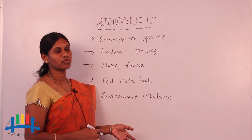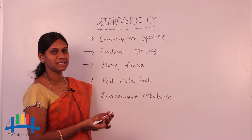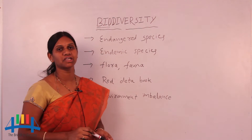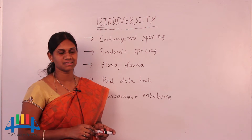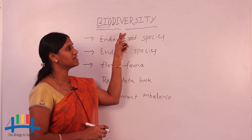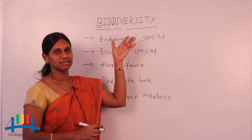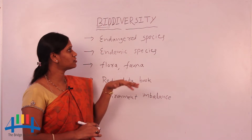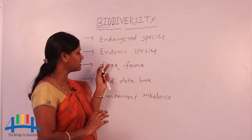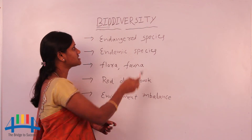Hello friends, now we are going to learn about biodiversity. Biodiversity means bio means the living things, diversity means variations. So which variations are present in the living things that are present on the earth, that is called biodiversity. So different types of flora and fauna present on the earth, maybe in different habitats, but totally we call it biodiversity. Different species of plants and animals are present, maybe in a habitat or maybe in an ecosystem — it is called biodiversity.